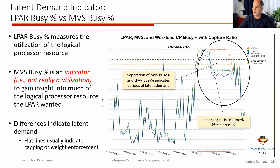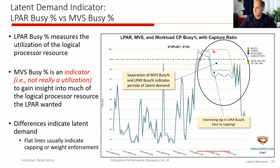Another indicator we want to look at when we have latent demand is LPAR busy versus MVS percent busy. This is also an indicator of the severity of the latent demand. The one line I'm pointing to is our LPAR utilization — how busy this particular LPAR is keeping its logical engines — where the previous example was how busy the LPARs were keeping the physical engines. The other line is the orange line at the top, which is our MVS busy time percentage. Think of the MVS busy time percentage as being the demand for CPU that this particular LPAR had. Another way of putting it is: the LPAR was this busy — the lower line — but it wanted to be this busy. The larger the separation of those two values, typically the more latent demand we have.